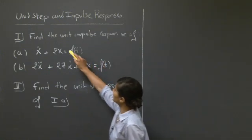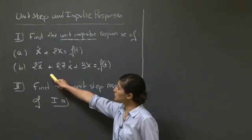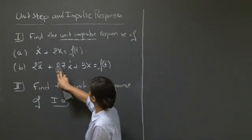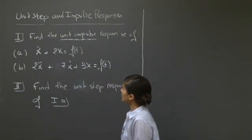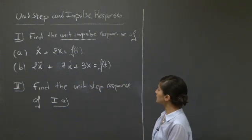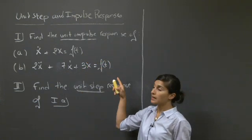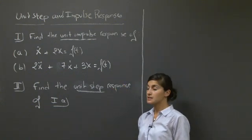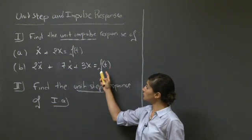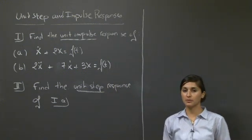In this question, we ask you to find the unit impulse response to these two equations: x dot plus 2x equals f(t), and 2x dot dot plus 7x dot plus 3x equals f(t). In the second part, you're asked to find the unit step response for the first equation. So here, the key points are to remember what we mean by unit impulse and unit step response, which initial conditions correspond to these responses, and what functions of f(t) you choose in each case. So why don't you pause the video and work through this problem, and I'll be right back.